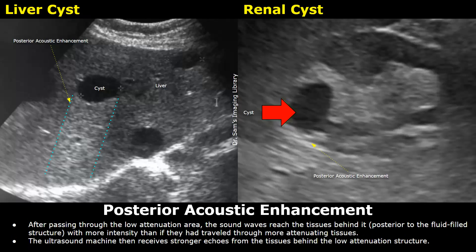When you find these structures, you see a bright hyperechoic area just behind the anechoic structure. This bright area is posterior acoustic enhancement. It occurs because when ultrasound waves pass through the anechoic fluid-filled structure, they don't lose much energy as compared to when they pass through nearby solid tissues.